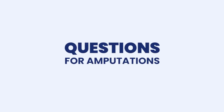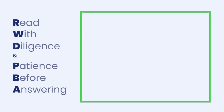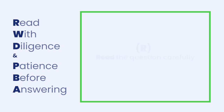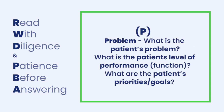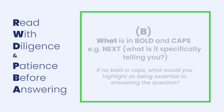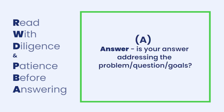Now let's get into questions for amputations using our Pass the OT 5 simple steps. Fill in the blanks or write it down on your whiteboard and remember the mnemonic: read with diligence and patience before answering. Step 1: read the question carefully. Step 2: identify the stage of the OT process. Step 3: identify the disease or diagnosis. Step 4: identify the patient's problem and level of performance. Step 5: identify the patient's priorities and goals, what is bold or in caps, and determine if the answer addresses the problem, question, or goals.